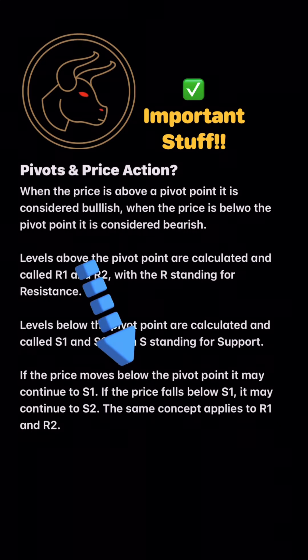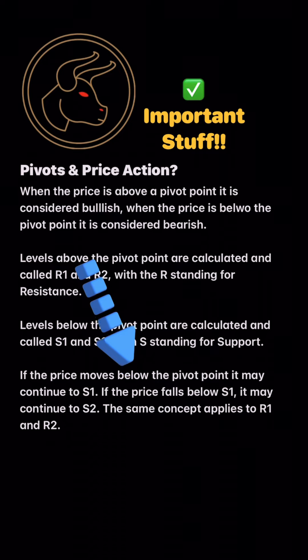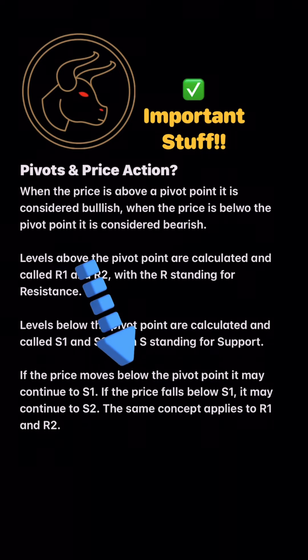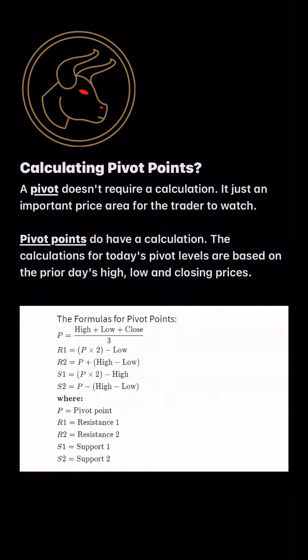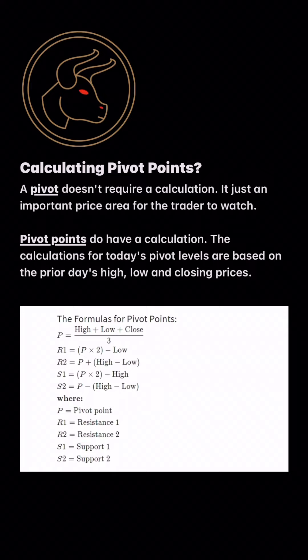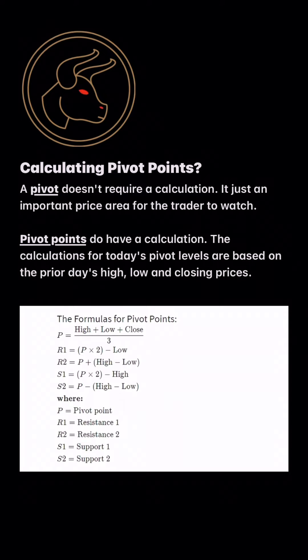If the price moves below the pivot point, it may continue to S1. If the price falls below S1, it may go to S2. The same concept applies to the R1 and R2 model. An important note: a pivot does not require calculation — it is just an important price area for the trader to watch. However, pivot points do have a calculation, and the calculation for today's pivot levels are based off the prior day's high, low, and closing prices.